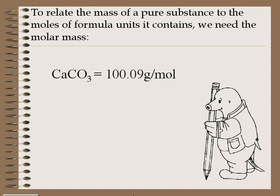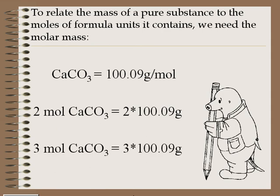This means that the mass of one mole of calcium carbonate formula units is equal to 100.09 grams. The mass of two moles is two times 100.09 grams, and the mass of three moles is three times 100.09 grams, and so on. In general, the mass of n moles of calcium carbonate is n times 100.09 grams.